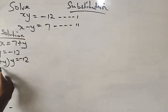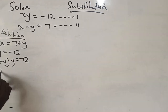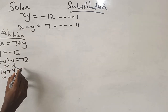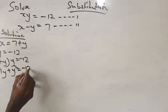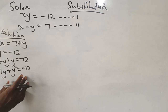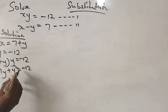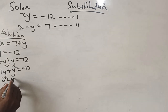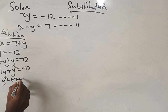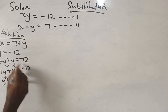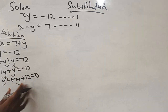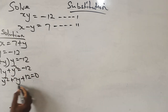I open up the brackets: 7 times y is 7y, plus y times y is y squared, equals minus 12. When I write this properly, I have y squared plus 7y plus 12 equals 0. So this is a quadratic equation.